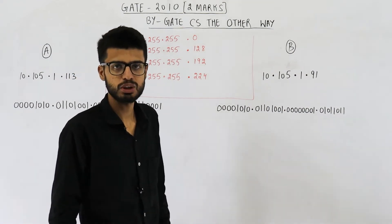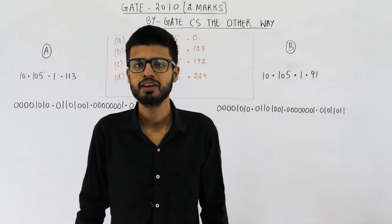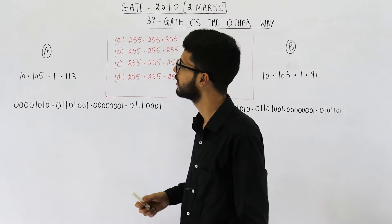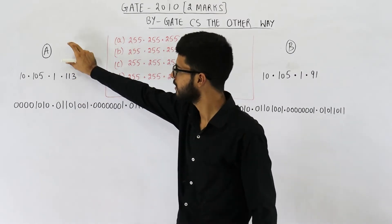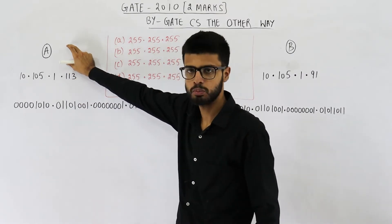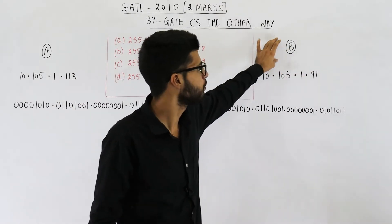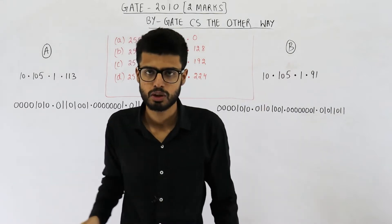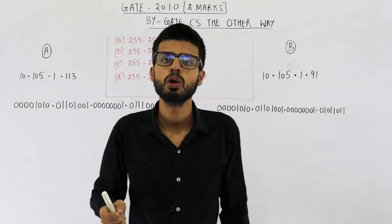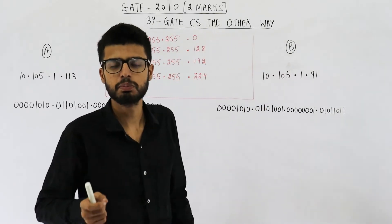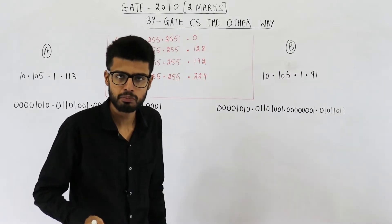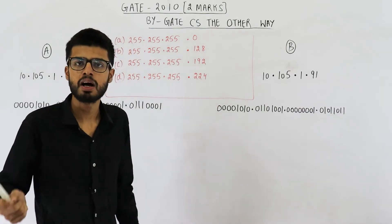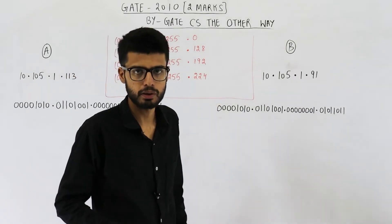Hello people, welcome back. This question is from the GATE 2010 exam and is worth two marks. They are saying we have two machines A and B, and their IP addresses are also given. Now if both of the machines belong to the same network, which of these four subnet masks is not possible?